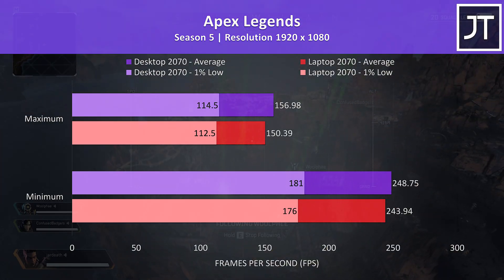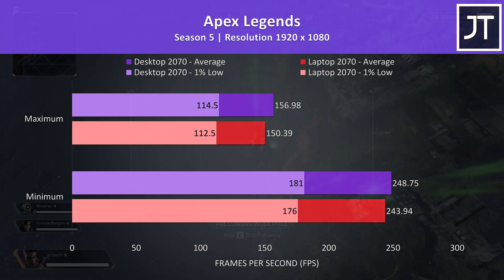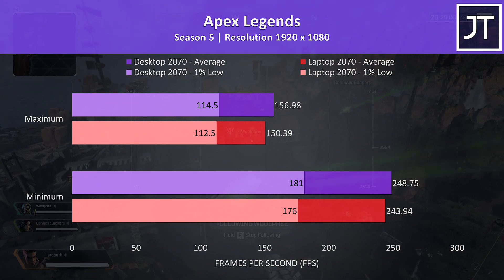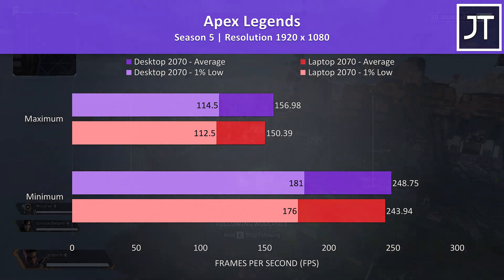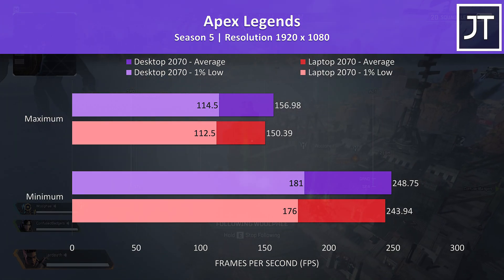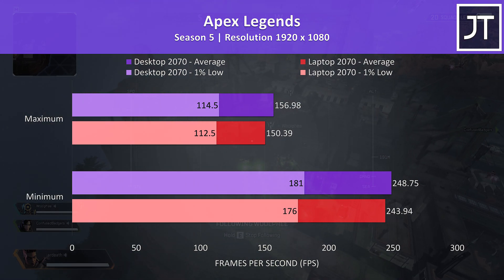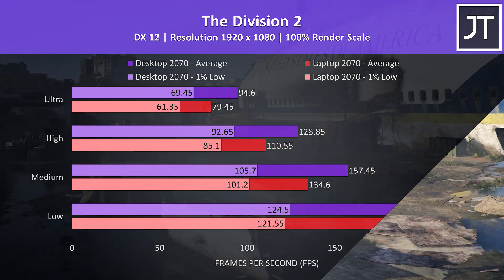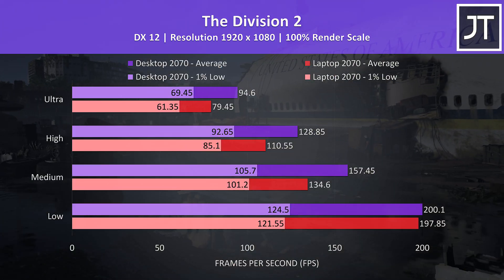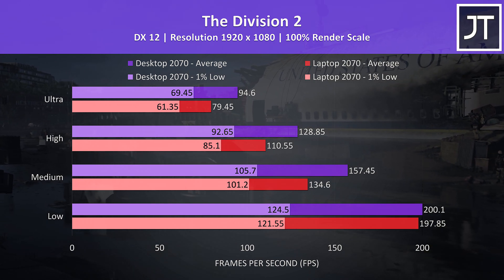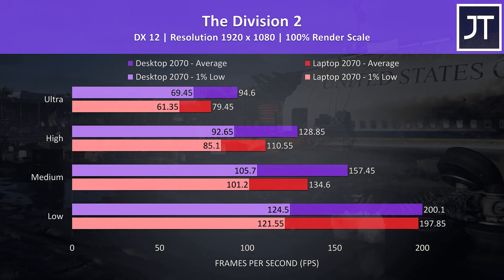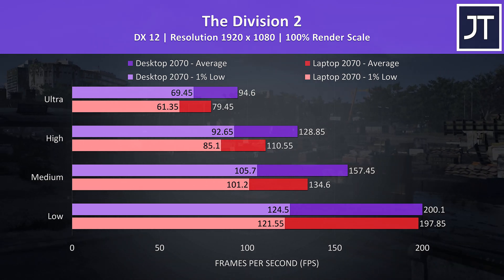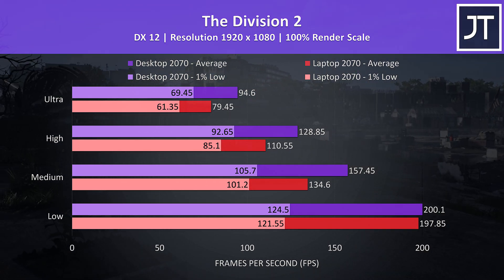Apex Legends was tested in the World's Edge map running through the drill site on both machines. This test saw one of the smallest differences out of all games tested, with the desktop 2070 just 4% faster in average FPS at max settings. The Division 2 was tested using the game's benchmark tool, and the desktop 2070 was seeing 19% higher average FPS at max settings, with a much smaller difference at low settings.